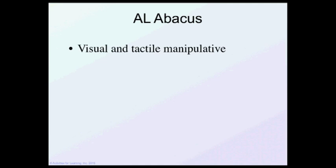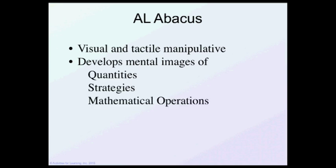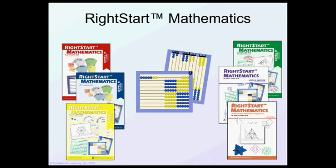The AL abacus is a visual and tactile manipulative that helps the children develop mental images of quantities, strategies, and mathematical operations. It also promotes subitizing, which we know is very important. It is the cornerstone of the Right Start Math program. It is used in all the levels except level G. Levels A through E use the abacus.